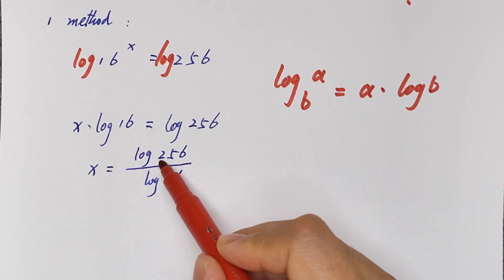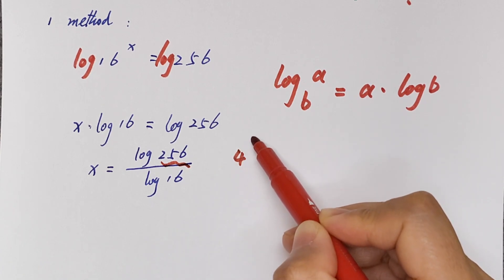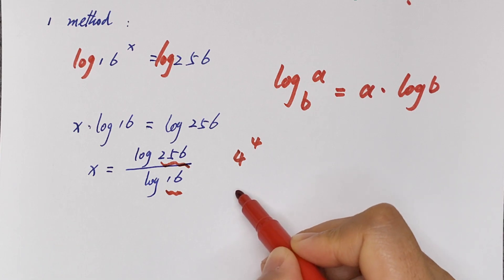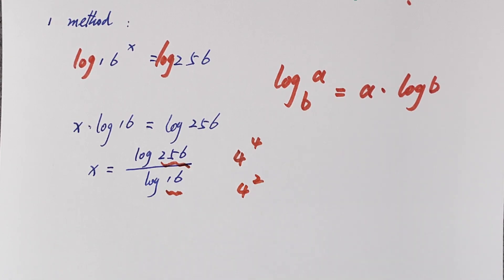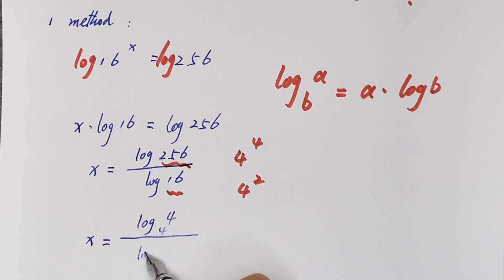Because 256 is same as 4 to the power 4, and 16 is same as 4 squared, x is equal to log 4 to the power 4 over log 4 squared.